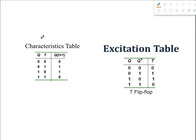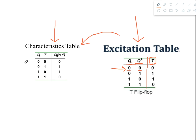Now we want to build the excitation table based upon the characteristic table. In the excitation table there are two parts: on the left we have the present state and the next state — two variables, four possible combinations — and on the right we write the flip-flop input T. For the first row, present state is 0 and next state is 0; we go back to the characteristic table and find the combination where present state is 0 and next state is 0, and for that combination T equals 0, so we write 0.